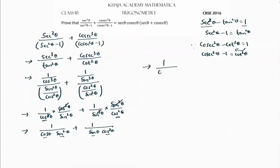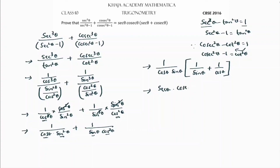I'll take 1/(cosθ·sinθ) as common. After taking that common, I'm left with sinθ from one term and cosθ from the other. Since 1/cosθ = secθ and 1/sinθ = cosecθ, the expression becomes secθ·cosecθ·(cosecθ + secθ), which is the required answer.